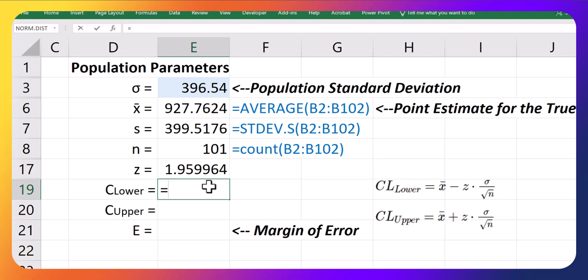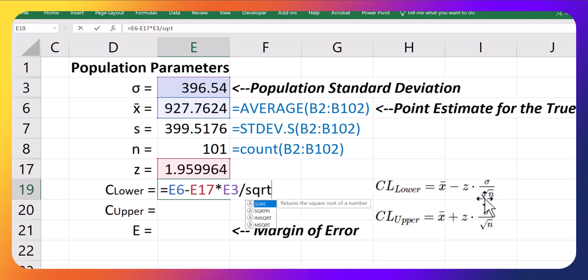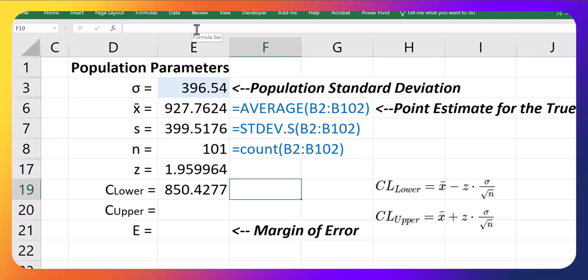Okay, so for the lower limit, take your sample average minus your z-score times your population standard deviation, divide by the square root of your sample size, like that. And I'm just going to comment out that formula so you can see it. I just use an apostrophe to do that.